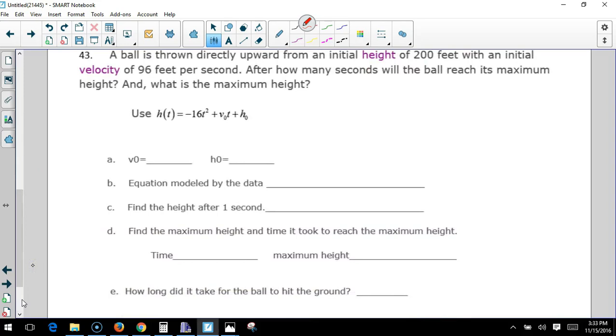Ball is shot up to the air 200 feet. That's H0. Initial velocity of 96 feet per second. The model is height as a function of time equals negative 16t squared plus 96t plus 200. Where's it at for one second? Plug one in, which would be negative 16 plus 96 plus 200. The other option is to put in the equation and go to one second, which is 280 feet.